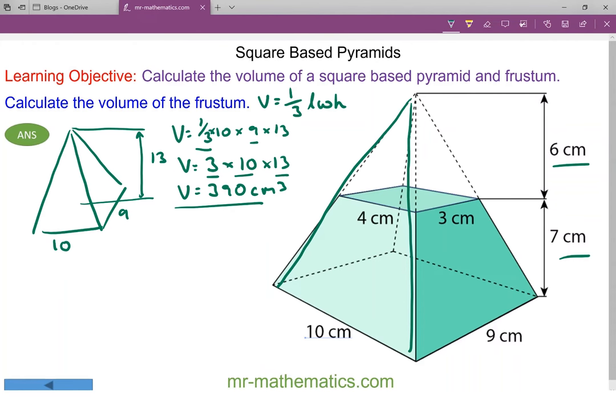Now we're going to consider the rectangular based pyramid on top, which is 4 by 3 with a perpendicular height of 6. So the volume is one third of the length times the width times the perpendicular height, which is one third of 4 times 3 times 6.